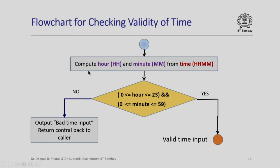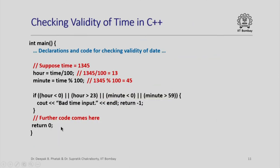For checking the validity of time, from the time in hour-minute format we compute the hour and minute parts separately. We check whether the hour lies between 0 and 23 and the minute between 0 and 59. In the program, with declarations and date-validity code hidden, we calculate hour and minute by dividing by 100 and taking the remainder. For example, if the time is 1345, the hour is 13 (quotient on dividing by 100) and the minute is 45 (remainder). If hour is less than 0 or greater than 23, or minute is less than 0 or greater than 59, we output bad time input and return minus 1.